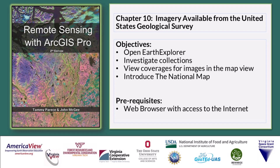Remotely sensed imagery is acquired with sensors, such as cameras, radar, and satellite sensors, using aerial platforms such as aircraft, satellites, and more recently drones. The United States Geological Survey, or USGS, has been designated as a central clearinghouse for much of the imagery collected by the federal government.